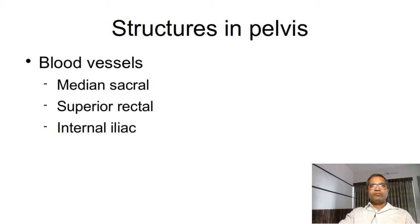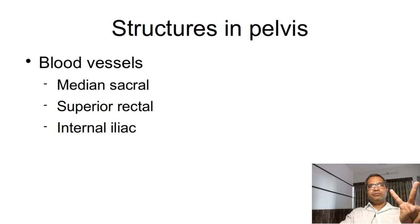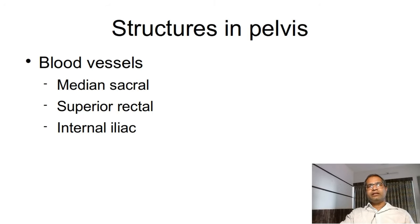In blood vessels, there are arteries which are paired and unpaired. First, median sacral artery. Second one is superior rectal artery. These — median sacral artery and superior rectal artery — are unpaired or single. But the third one, internal iliac artery, is a paired one.